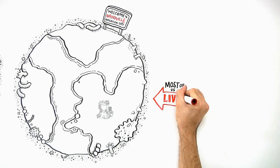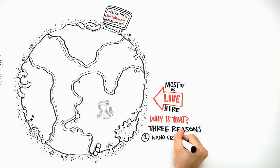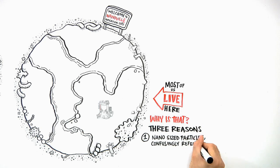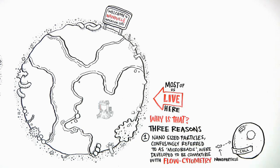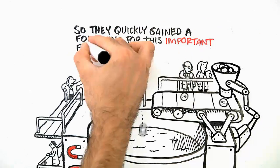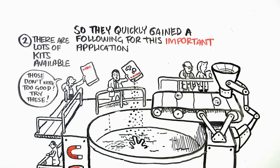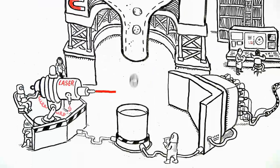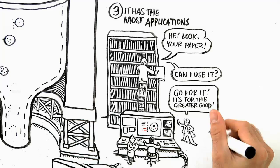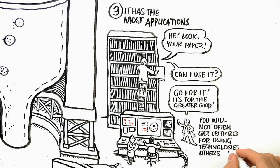Most of us live on the nano-sized planet of cell isolation. Why is that? There are three primary reasons. First, nano-sized particles, confusingly referred to as microbeads, were developed to be compatible with flow cytometry, so they quickly gained a following for this important application. Second, there are a lot of kits available. Third, it has the most applications. And as research scientists, you will not often get criticized for using technologies that others have used.